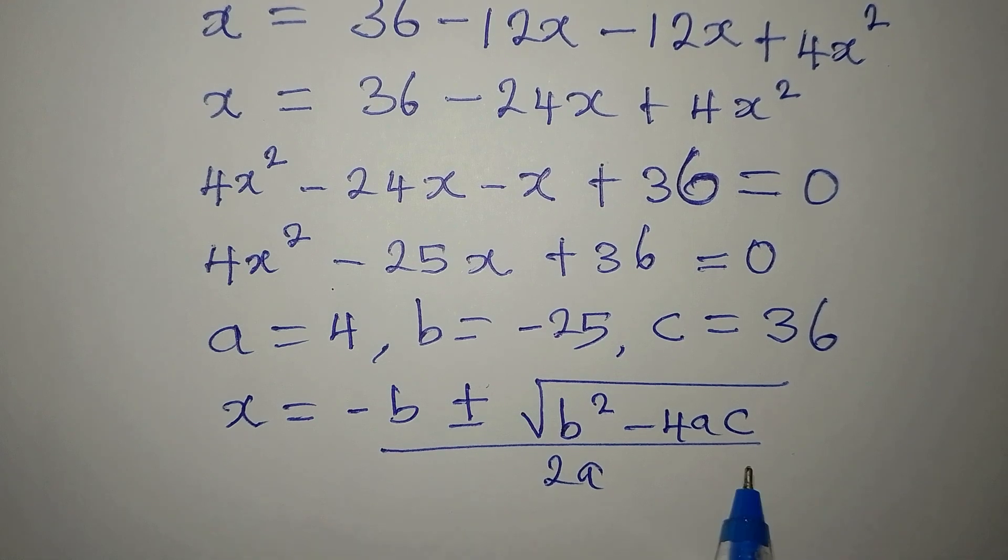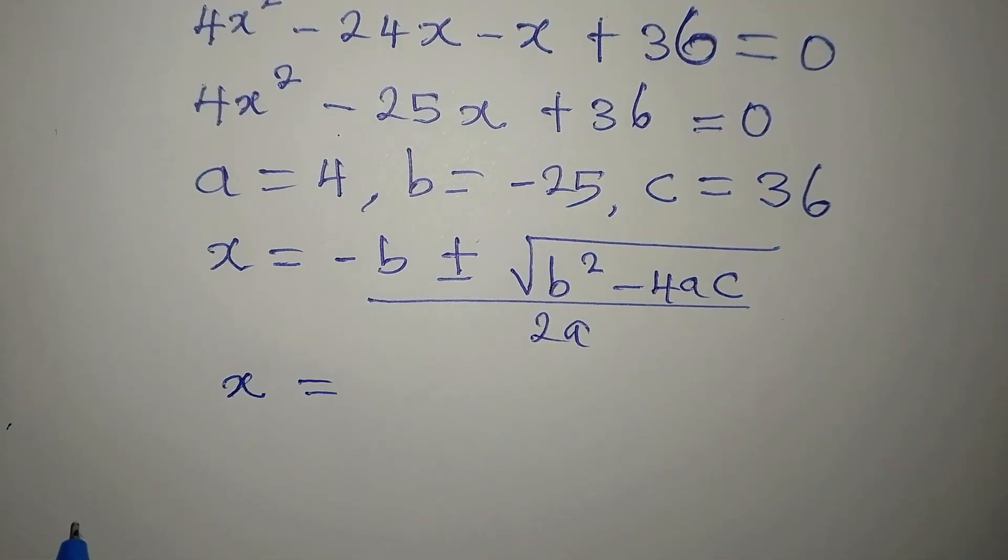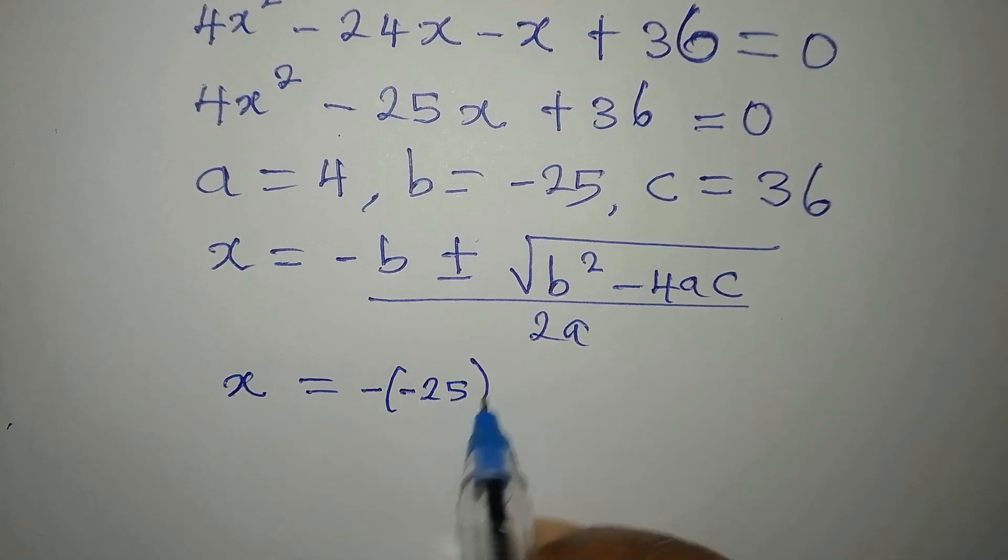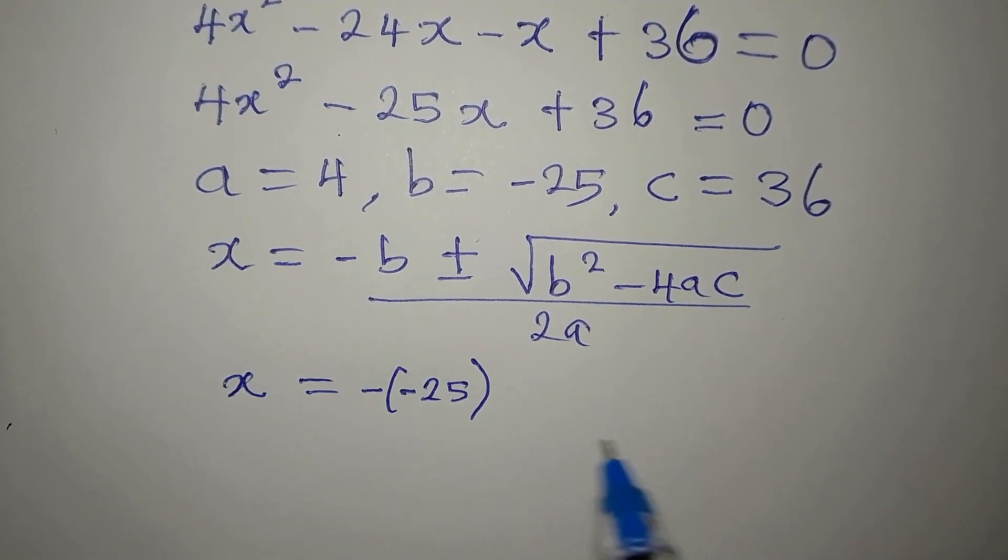I think the most difficult thing about using the formula is remembering the formula. So now, in place of ABC, we'll write 4, minus 25, and C respectively. So our x will now be minus minus 25.